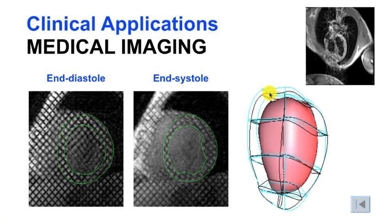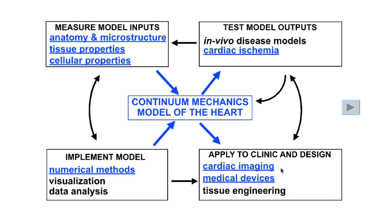Here we see a model of that shape change reconstructed from the MR tagging images in a patient. Between end-diastole shown in cyan and end-systole shown in black, the shape change is actually very small, and the left ventricle itself is highly enlarged compared with normal. This is because this patient is in end-stage heart failure and has a very low ejection fraction, so the strains in the wall during systole were abnormally small.